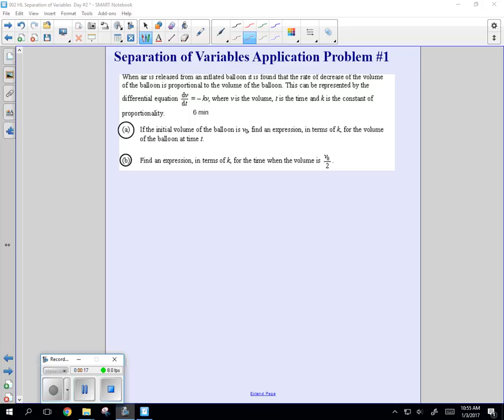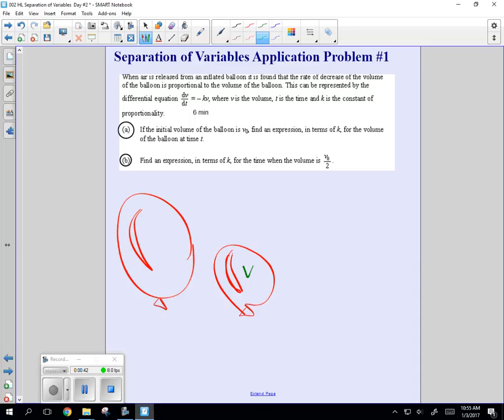It says when air is released from a balloon, so let's say you have this balloon and you're releasing the air, and what they're saying is the rate of the volume decrease is proportional to the volume. So in other words, the smaller the volume, the slower the... Let's say that again. It says the rate of decrease of volume of the balloon is proportional to the volume. So when the volume is big, what's the rate? Big. What about when the volume is small? It's small.